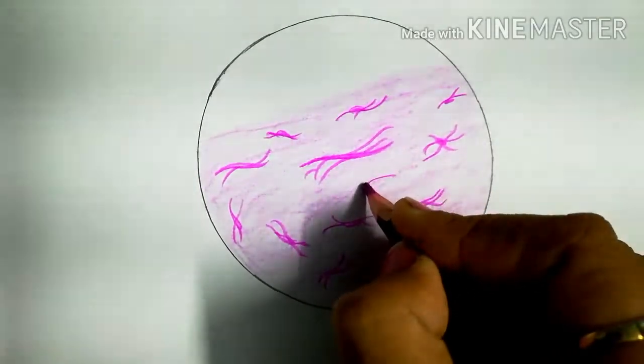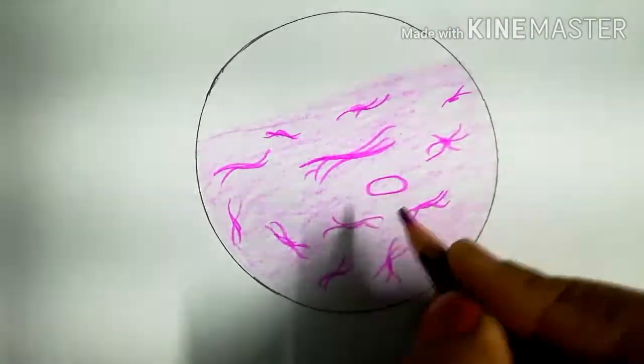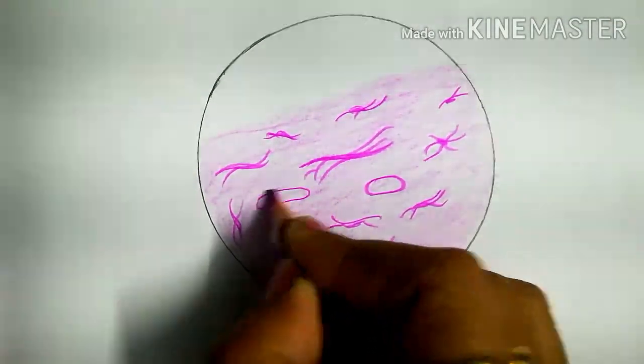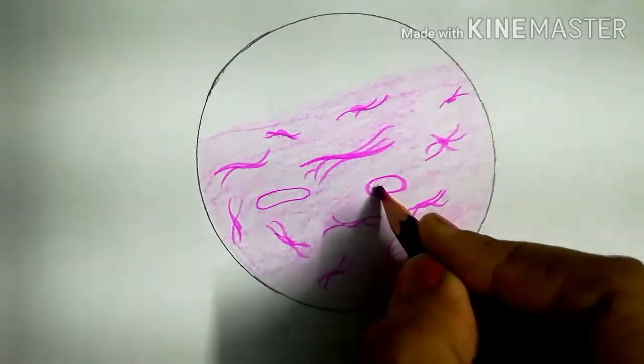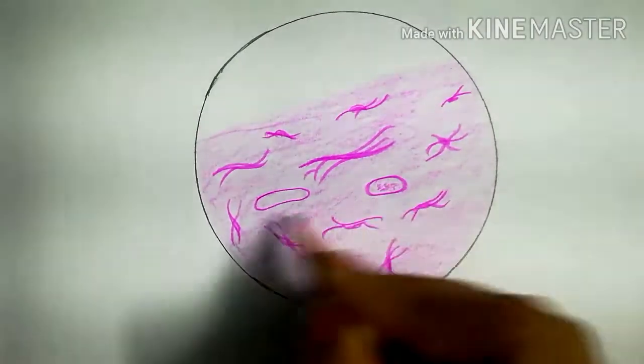Capillaries are lined by flat cells, endothelial cells. These are the different capillaries we have made. You can fill these capillaries with somewhat blood that can be seen like this.